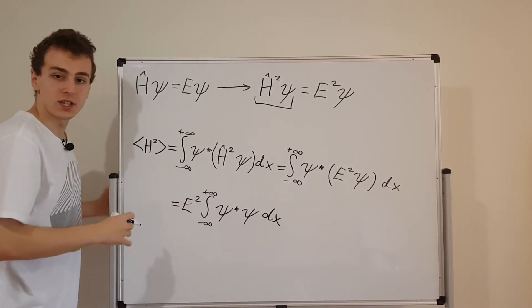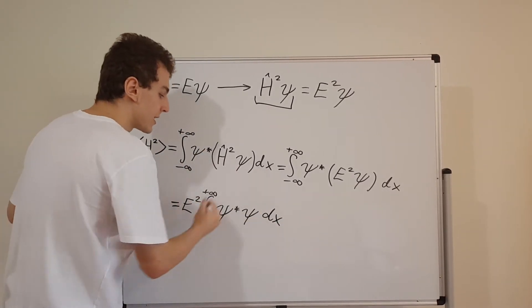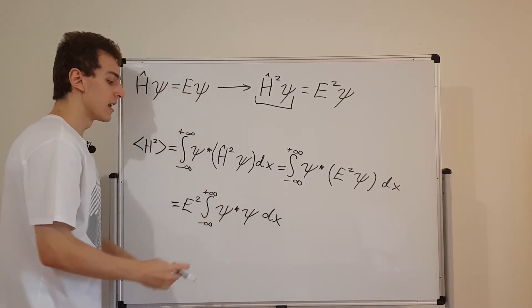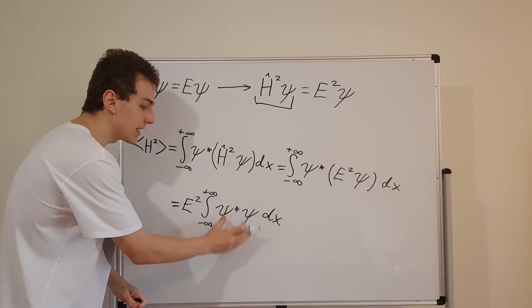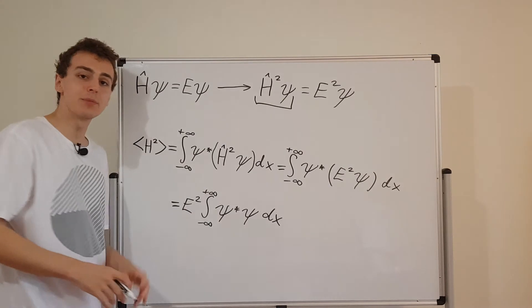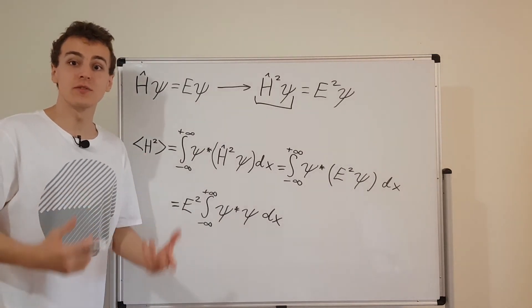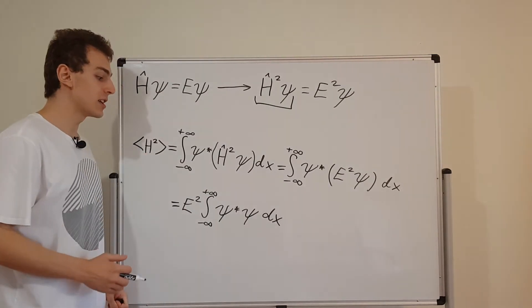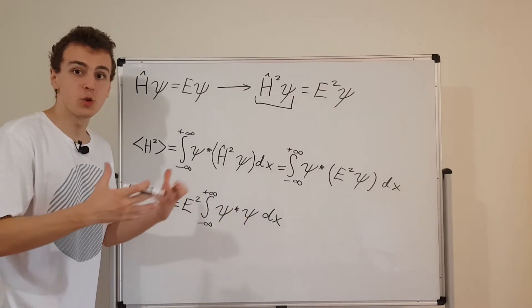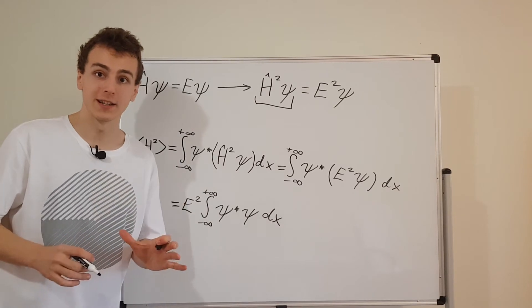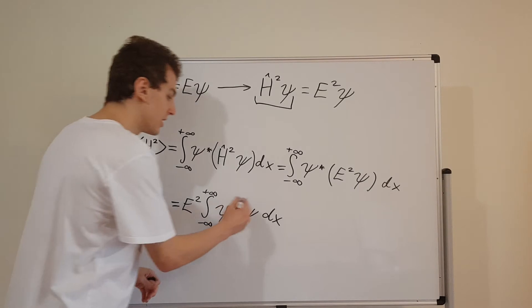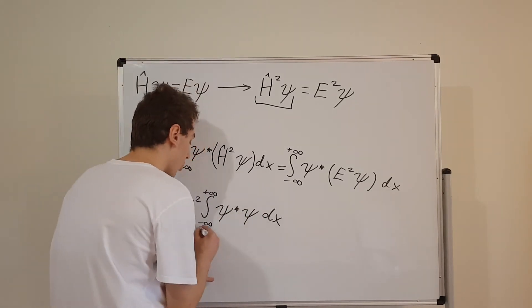Now E squared is just a constant. What is this mess over here? In the past few videos, we've actually dealt with this stuff over here. This is just the probability density function integrated over the entire domain. And that has to be one. That's a consequence of the normalization condition. So the normalization condition is satisfied because psi over here actually belongs to a wave function that is normalized. It has to be normalized in order to be a physically reasonable state. So this over here is actually one.